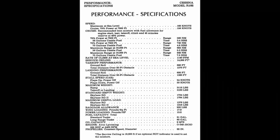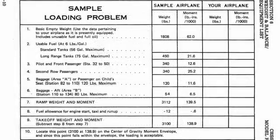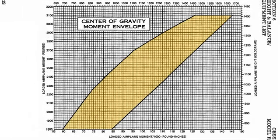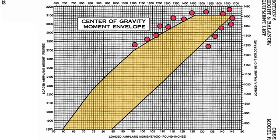Now that we know the maximum takeoff weight, let's go into our weight and balance problem for this flight. In section 6 of the POH — that's the weight and balance section, page 6-10 — there's a sample loading problem with a weight column and a moment column. There are two important things when doing weight and balance: the weight, to ensure we're at or below maximum, and the moment, so our center of gravity falls inside the CG envelope.